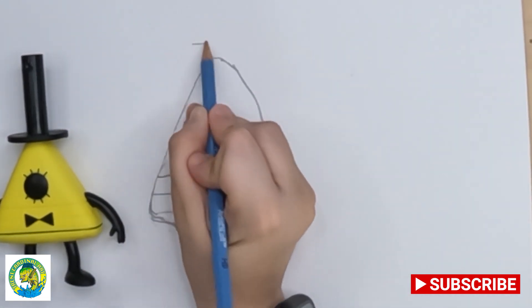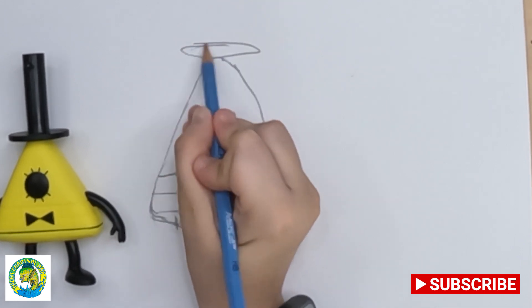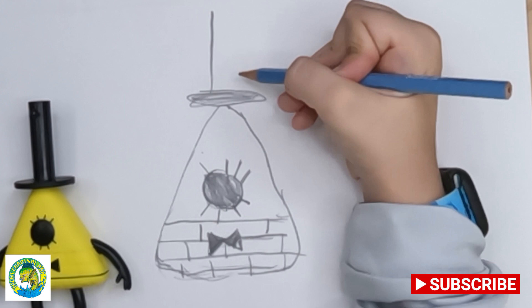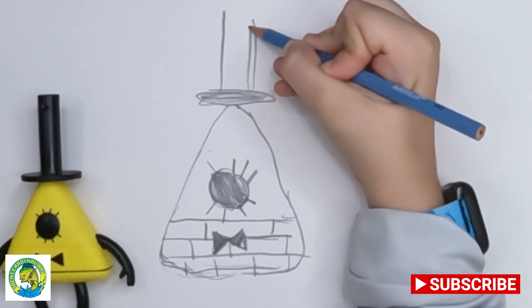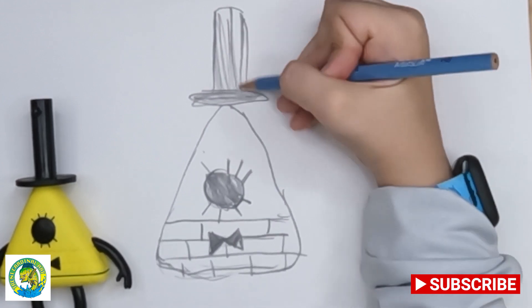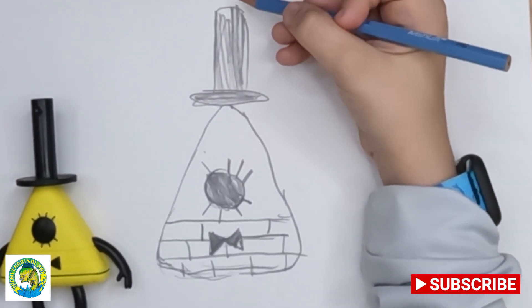Then we're going to make his hat. So we're just going to draw a little squished oval. And we're going to draw two lines and connect them. Then you're going to color that in. So that is his top hat.